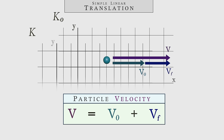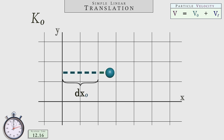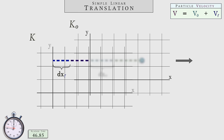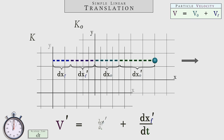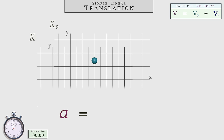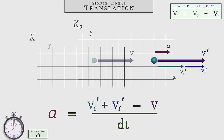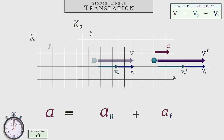Next, let's find the acceleration equation of the particle. Over a succeeding time period of duration dt, the particle travels a new coordinate distance dx0 prime, while the frame travels a new distance dxf prime. The velocity v prime over this duration is expressed as the new coordinate velocity plus the new frame velocity. To find the actual acceleration, we subtract the prior velocity v from this new velocity v prime, and divide by dt. This tells us the actual acceleration of our particle equals its acceleration through the coordinate system, plus the acceleration of that coordinate system itself.